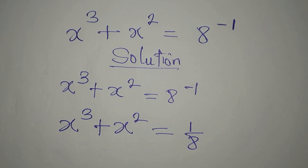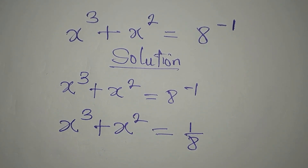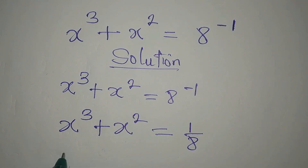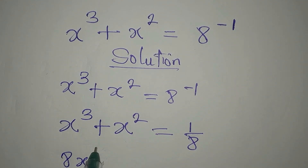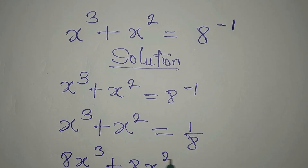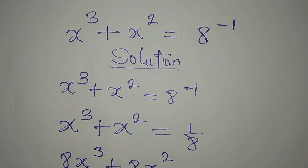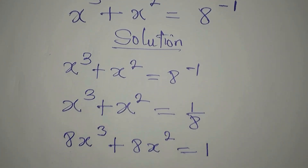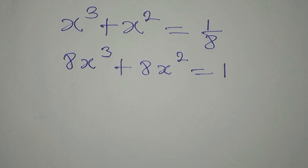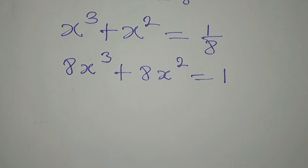We can clear out this fraction by multiplying all terms by 8. So here we are going to have 8x to the power of 3 plus 8x to the power of 2, and that will be equal to 1 because 8 will cancel itself.